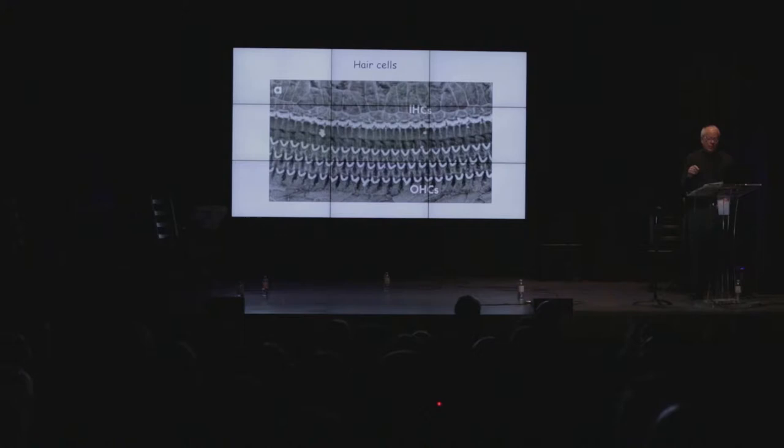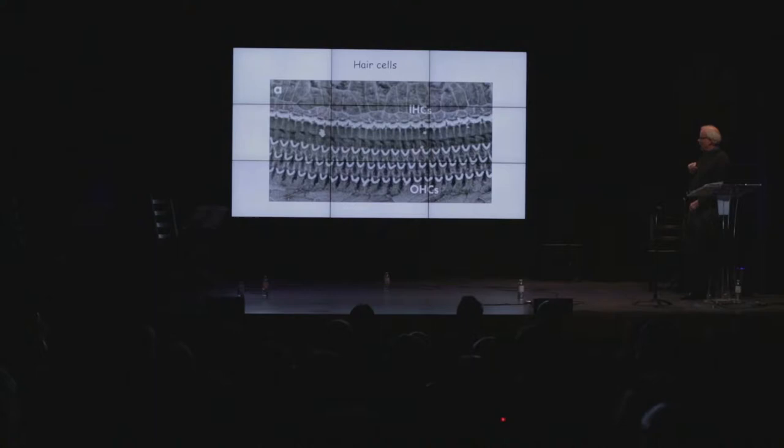The hair cells are embedded in the basilar membrane. Here is an actual micrograph showing them. There are two types: outer hair cells (OHCs) in three rows, and one row of inner hair cells at the top. The little tufts coming out of the hair cells are called stereocilia — that's why they're called hair cells. The inner hair cells are the auditory receptors; when activated, these receptors send signals into the brain. Outer hair cells modulate the stiffness of the basilar membrane, amplifying the response to sound and sharpening frequency specificity.